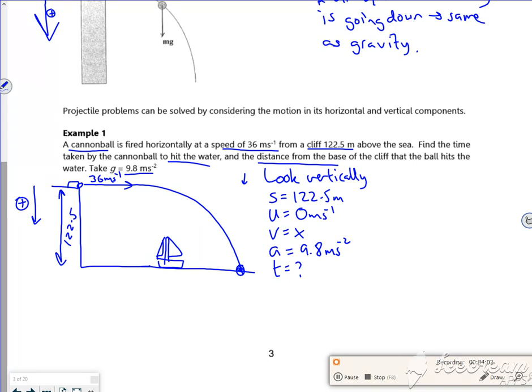So which SUVAT equation doesn't have V in it? That's S equals UT plus a half AT squared. So 122.5 is, let me just put the numbers in because I'm going out of time. There, look. So I've put the numbers in. I'm going to divide through by 4.9. That gives me 25 for T squared. So T is 5 seconds.